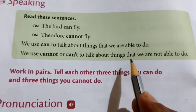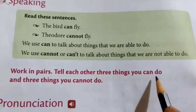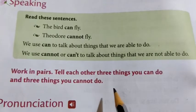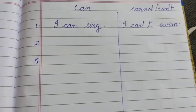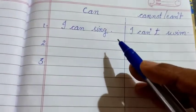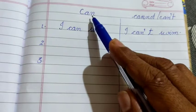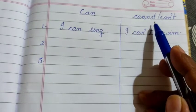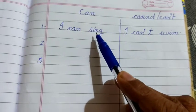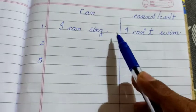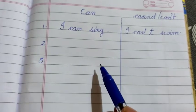Like that, write three things you can do and three things you cannot do. This is homework for you. Draw a line in your notebook and write — first column: can, and second column: cannot. One example has been done for you: I can sing, and I can't swim. You can complete two more.